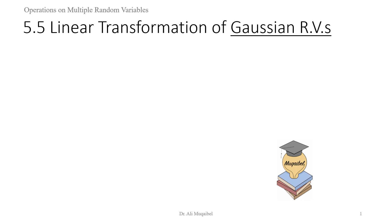Hello, this is Dr. Ali Mugabel, and we're considering linear transformation of Gaussian random variables. X1, X2, up to X sub-N are jointly Gaussian random variables.